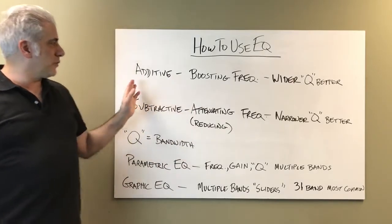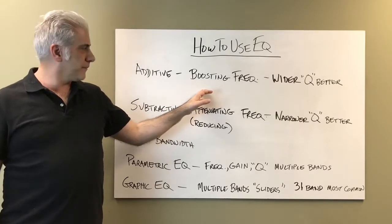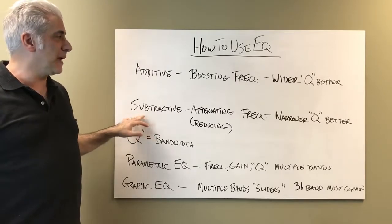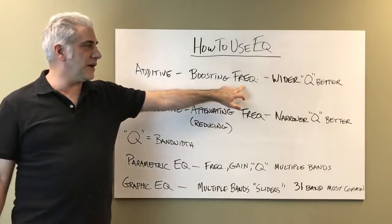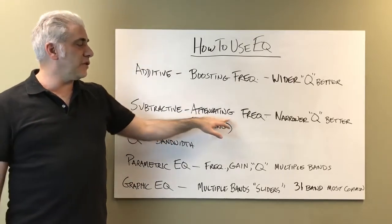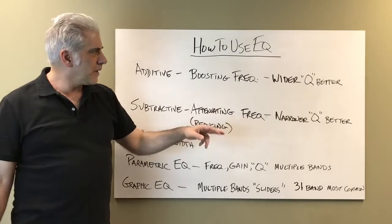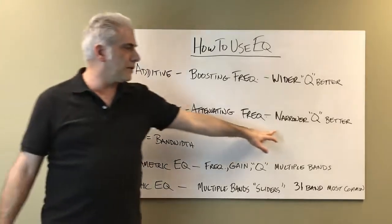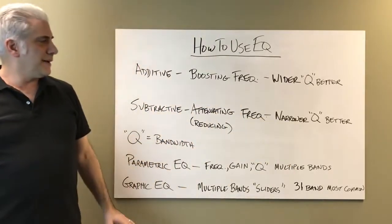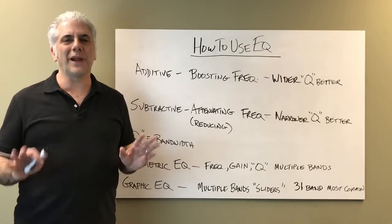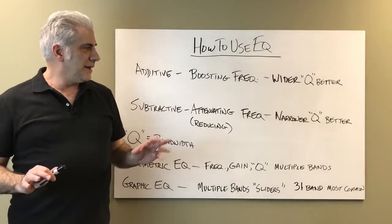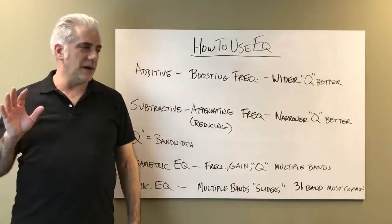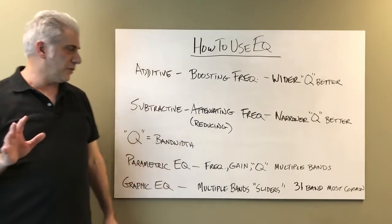Let's talk about two different types of EQ that are generally considered: additive and subtractive. Additive EQ is boosting frequencies. Subtractive EQ is attenuating, which means reducing frequencies. You'll hear people say that wider Qs are better for boosting and narrower Qs are better for subtractive — that's a general rule of thumb, but I wouldn't necessarily stick with that completely. I do use subtractive EQ quite a lot to get rid of anomalies.